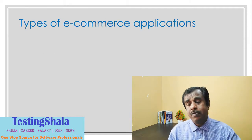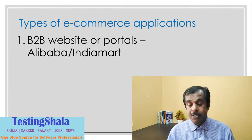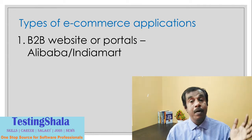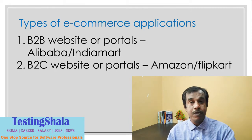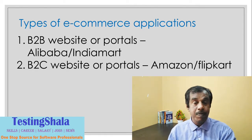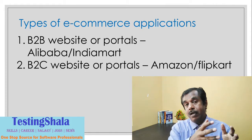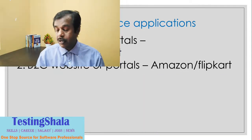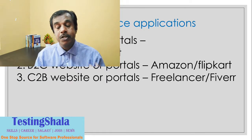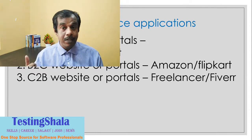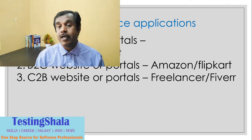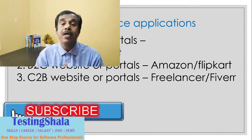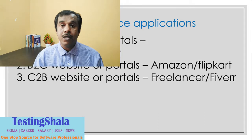Now let us understand what are the different types of e-commerce applications. One is B2B — like Alibaba or IndiaMART — where business people sell to other business people, such as manufacturers selling to businesses. B2C websites like Amazon and Flipkart are where sellers and manufacturers display their products and individual customers buy from them. Then there are C2B websites or portals like Freelancer and Fiverr, where individuals display their skills and say 'I'm going to help you for $5' or '$10' — sharing knowledge, skills, or work with businesses.